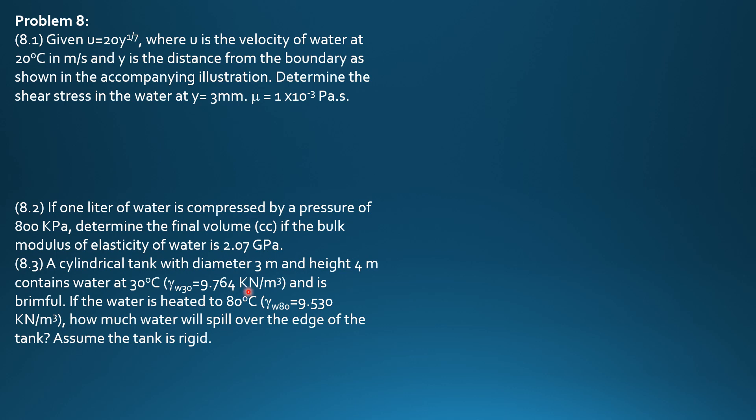A cylindrical tank with diameter 3 meters and height 4 meters contains water at 30 degrees Celsius, where the specific weight of water at 30 degrees Celsius is 9.764 kilonewtons per cubic meter and is brimful. If the water is heated to 80 degrees Celsius, where the specific weight is 9.53 kilonewtons per cubic meter, how much water will spill over the edge of the tank? Assume the tank is rigid.